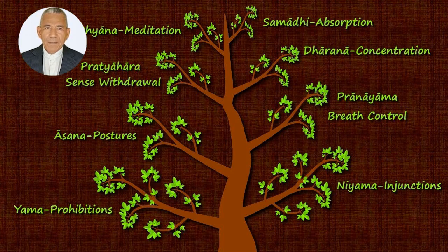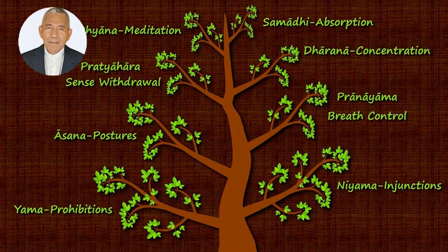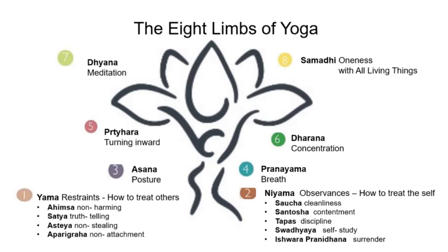Phases of Raja Yoga: 1. Yama — Social Code; 2. Niyama — Personal Code; 3. Asana — Posture, States of Being; 4. Pranayama — Control of Prana, Cosmic Energy; 5. Pratyahara — Withdrawal of the Senses; 6. Dharana — Concentration; 7. Dhyana — Meditation; 8. Samadhi — Transcendental Awareness.